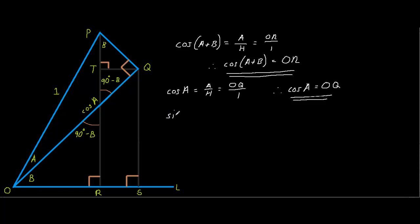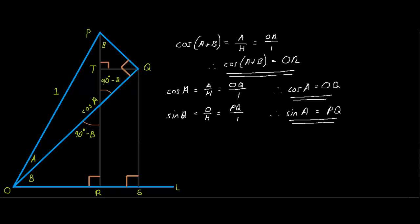Now we're going to find sin A — opposite over hypotenuse. We're going to use the same triangle OPQ. The opposite of OPQ is PQ, and the hypotenuse of OPQ is 1. Therefore, sin A equals PQ. Since this is the case, I'm going to write sin A over here, as it is PQ.